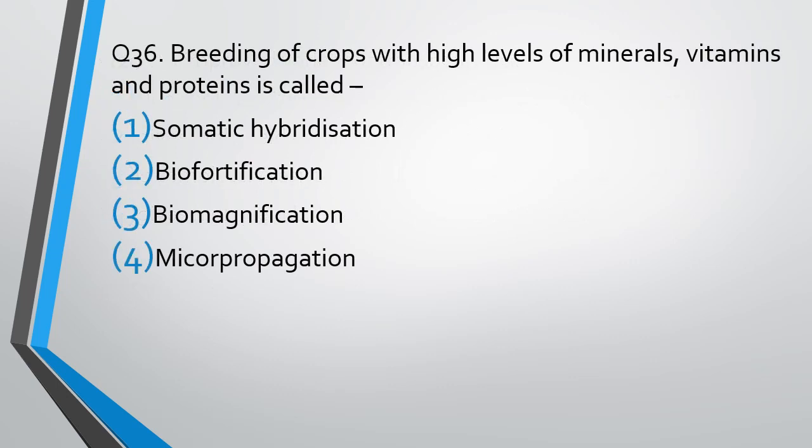Question number 36. Breeding of crops with high levels of minerals, vitamins, and proteins is called: somatic hybridization, biofortification, biomagnification, or micropropagation. The correct answer is option 2 — biofortification.